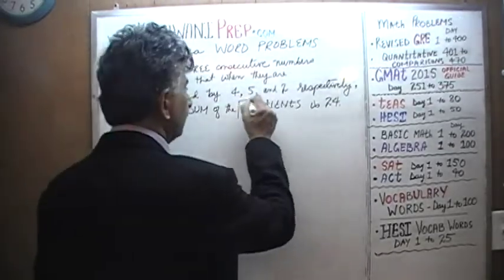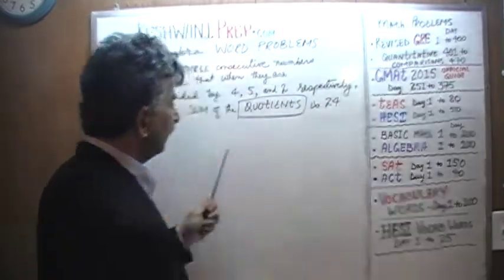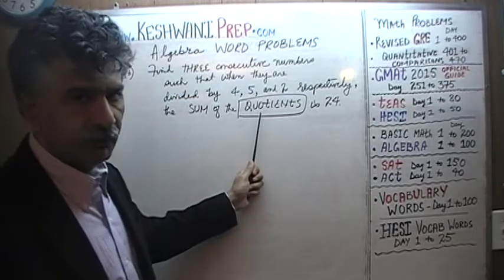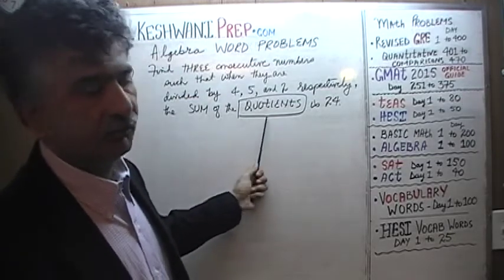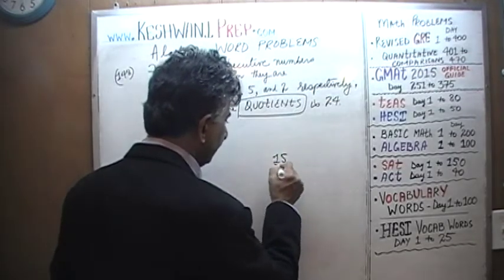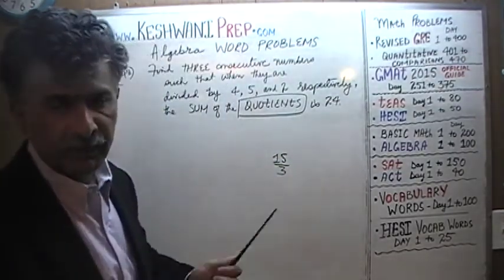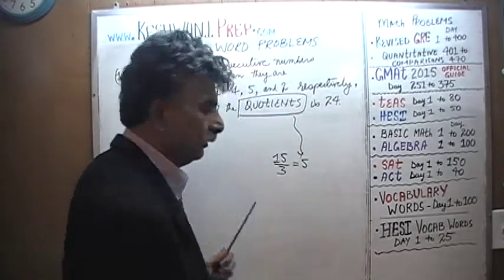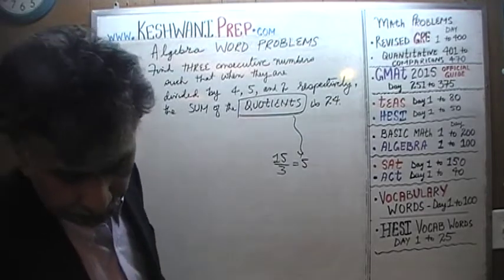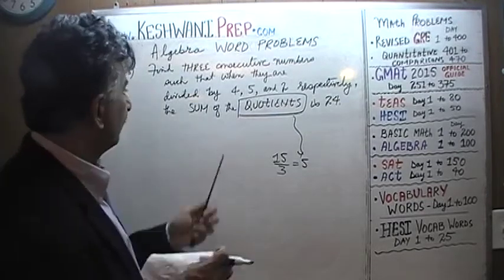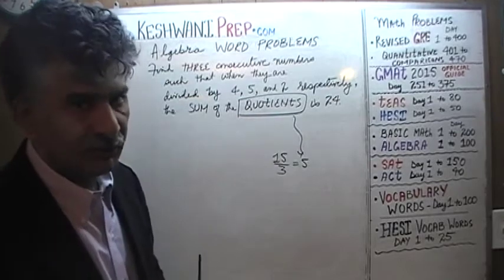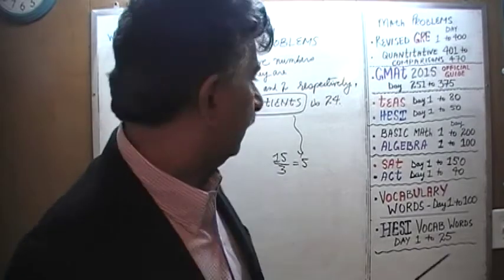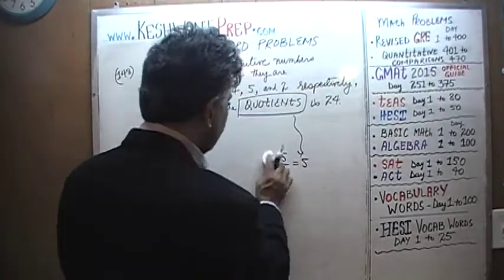The sum of their quotients happens to be 24. Quotient is a fancy way of saying the result of the division. For example, if you divide 15 by 3, the answer is 5 — that is called the quotient. So when you divide these quantities by 4, 5, and 2, the sum of those three results — those three quotients — we are told is 24.